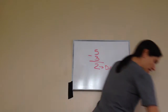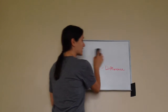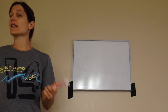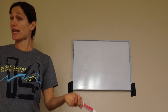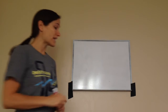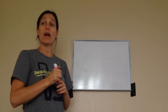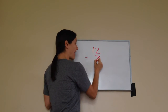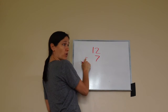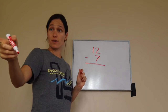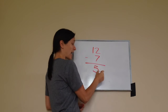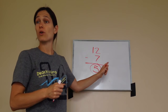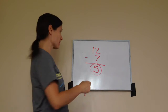Watch the wording of this: when seven is subtracted from 12, what is the difference? They're asking what's the answer when seven is subtracted from 12. So if I have 12 and seven is taken away or subtracted from 12, what do I have? Five — five, you're exactly right. Five is the answer.